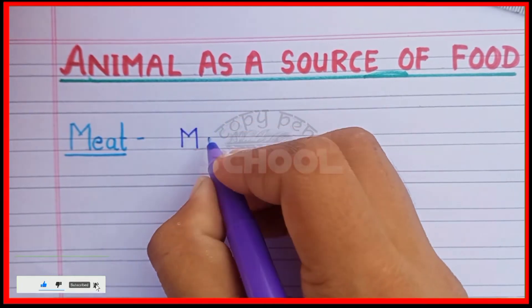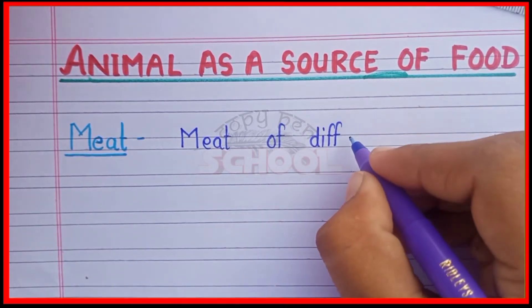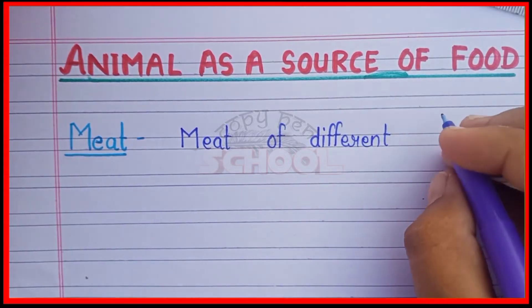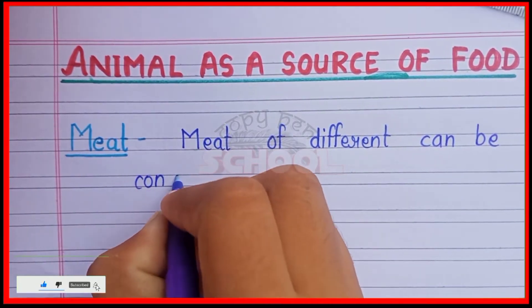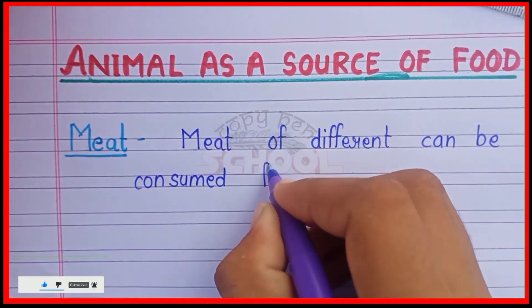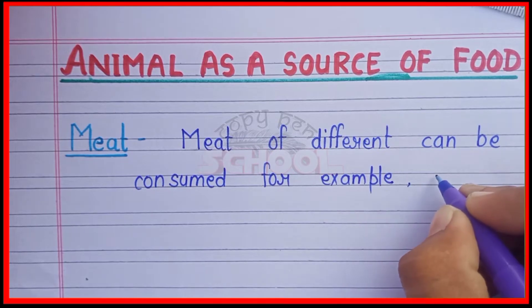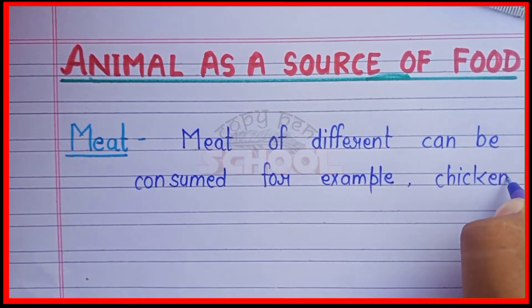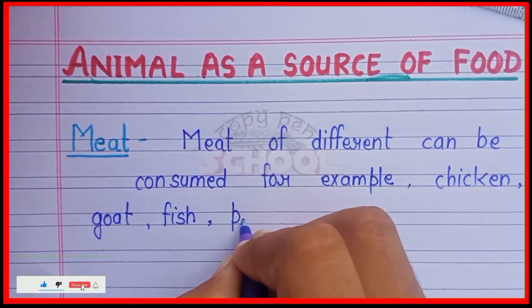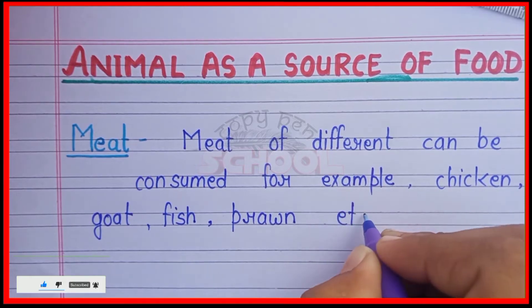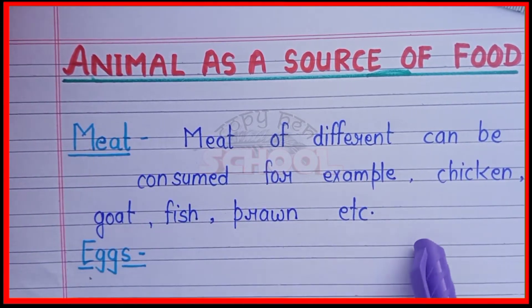First, meat. Meat of different animals can be consumed. For example, chicken, goldfish, prawn, etc.